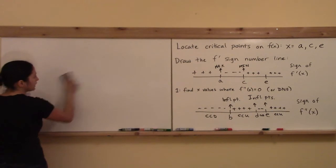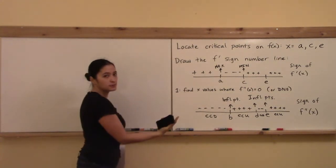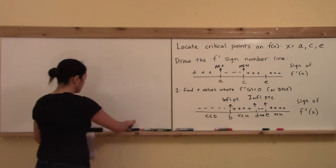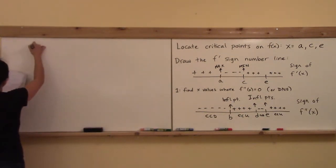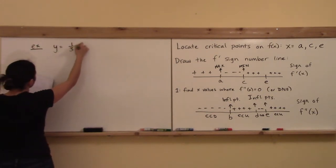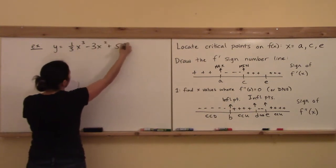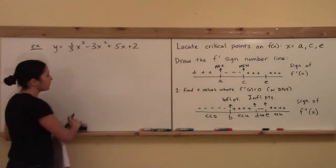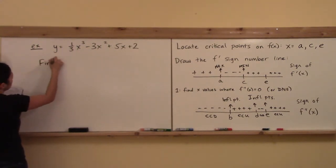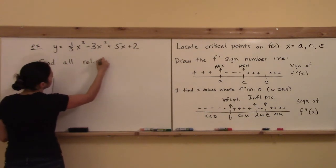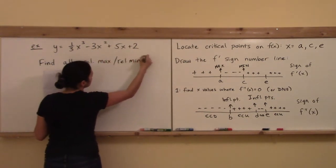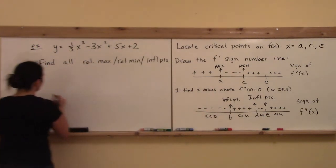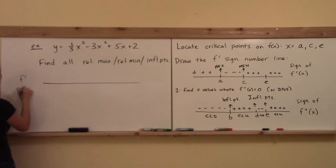Given the equation, I want you to draw the f' sign number line and the f'' sign number line, and draw the appropriate conclusions from each. Exercise number one: y equals one-third x³ minus 3x² plus 5x plus 2. Draw the f' sign number line, the f'' sign number line, and find all relative max, relative min, and inflection points.